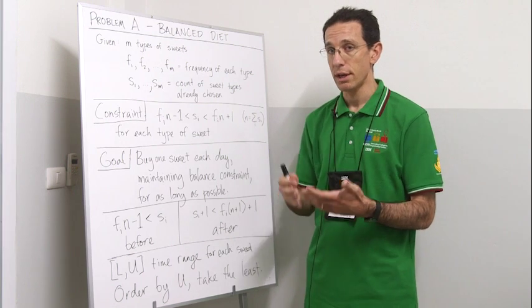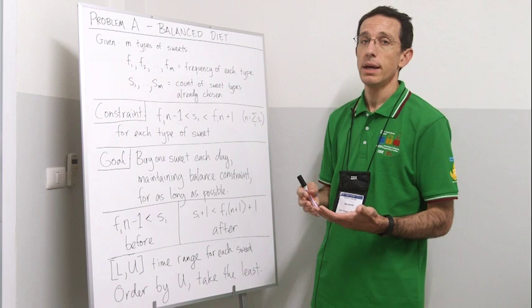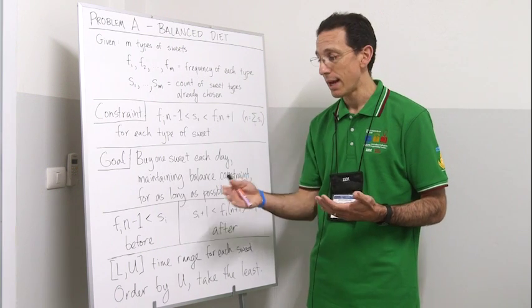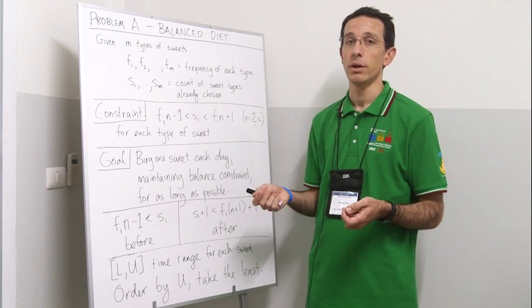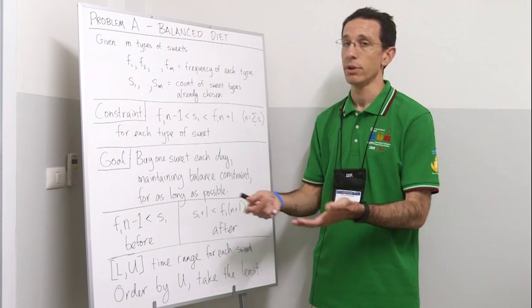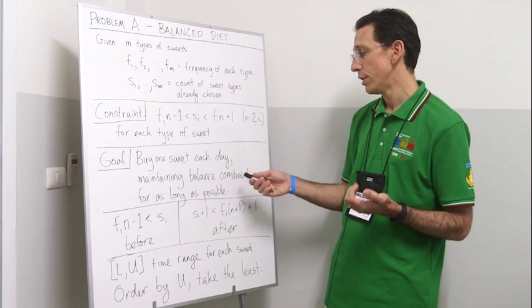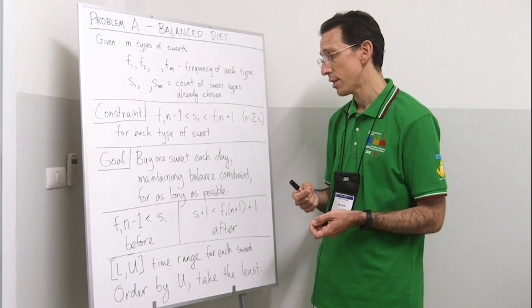Because if we don't do that and we choose something that has an upper bound that's later, we could achieve better performance and extend our streak longer by choosing the one that ends earlier. The goal is to pick sweets as long as possible.